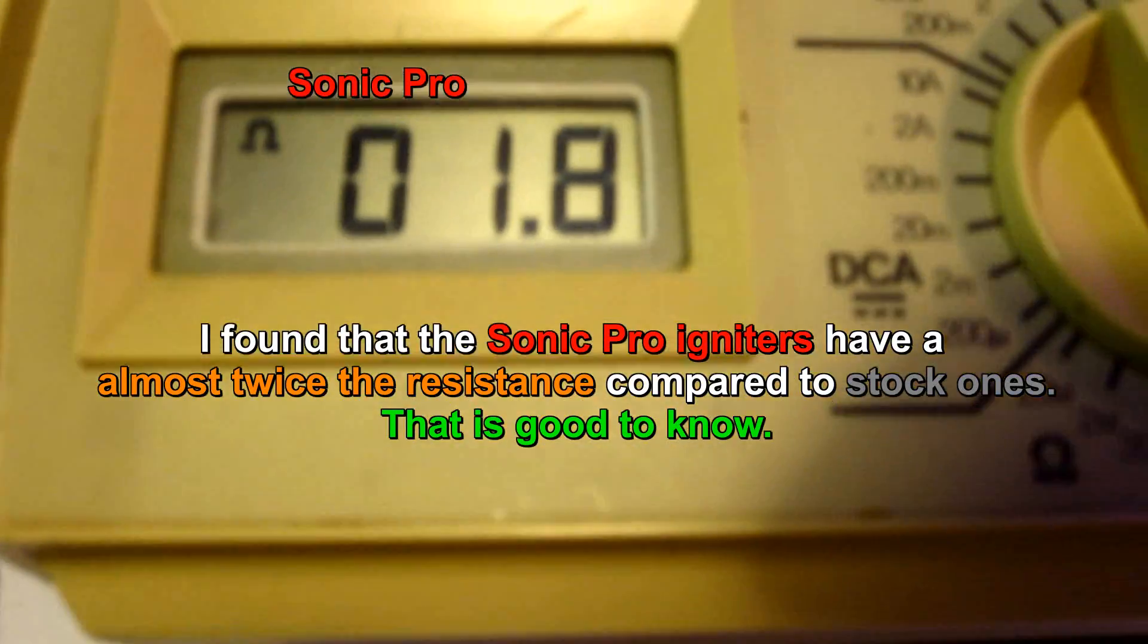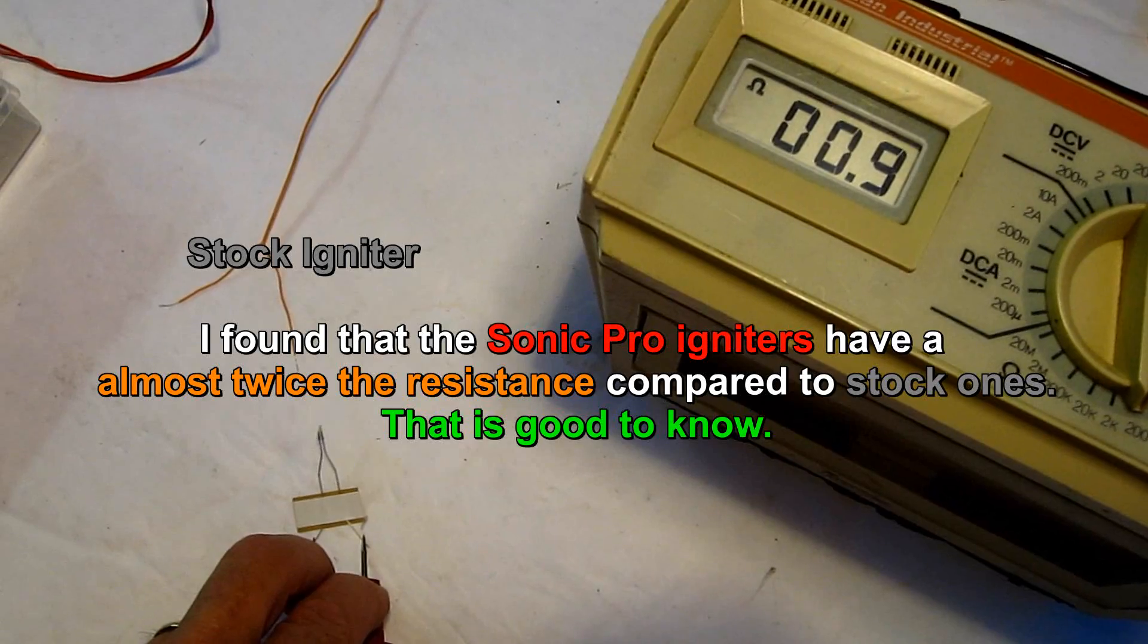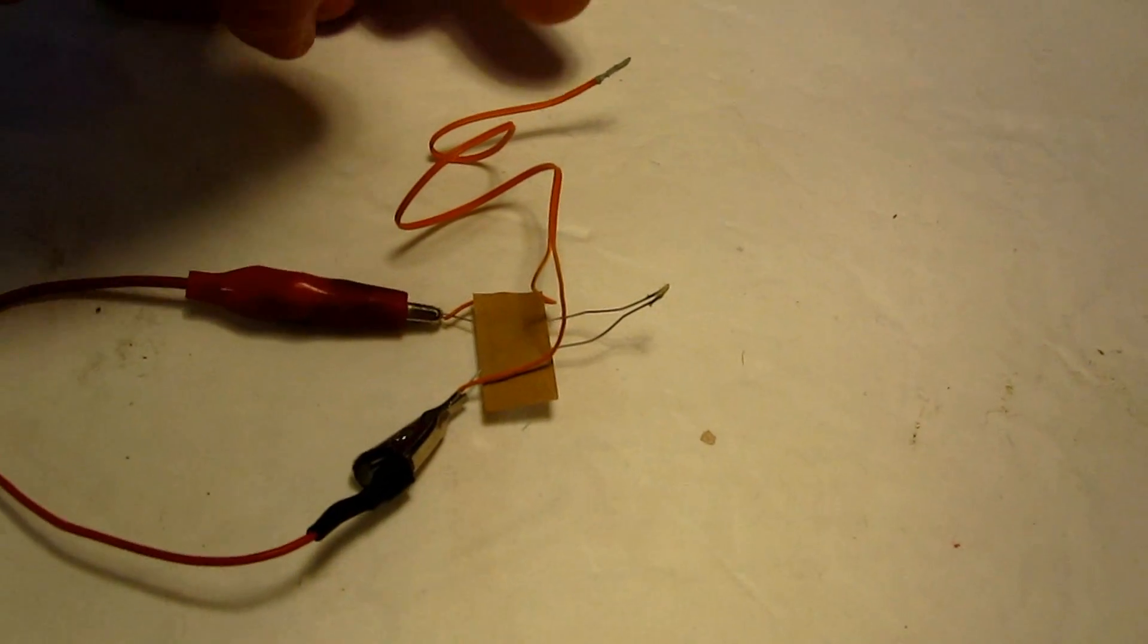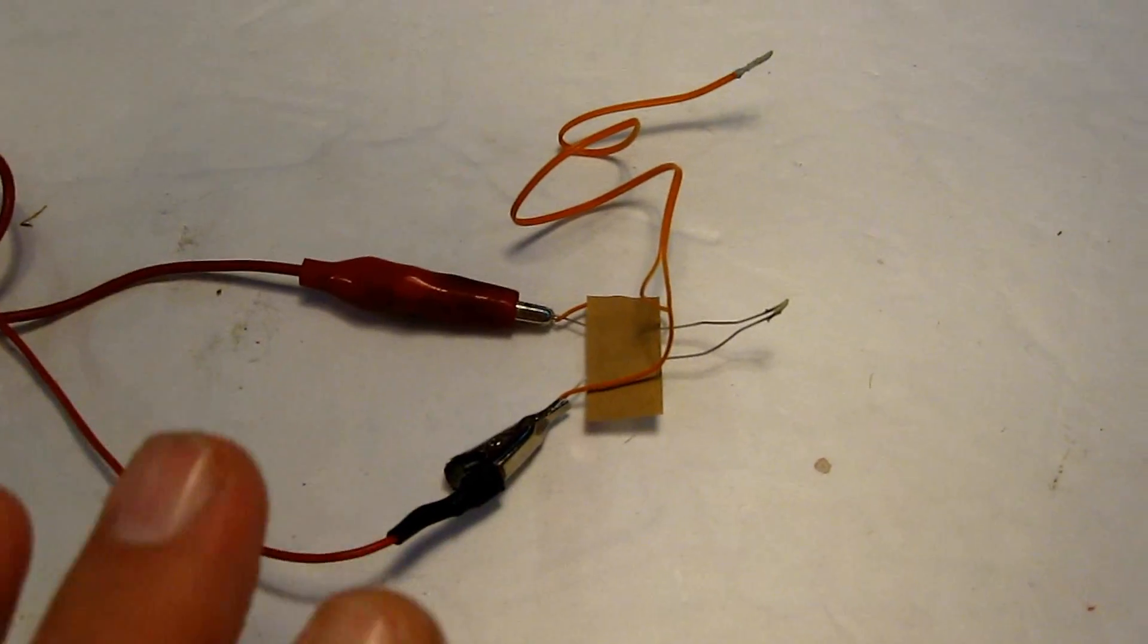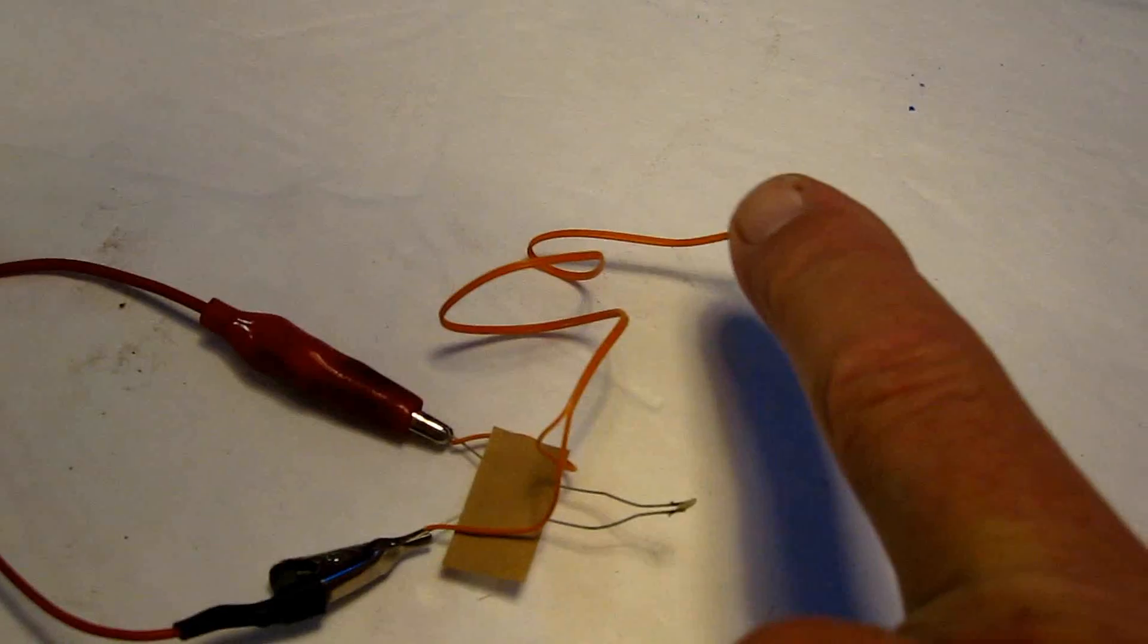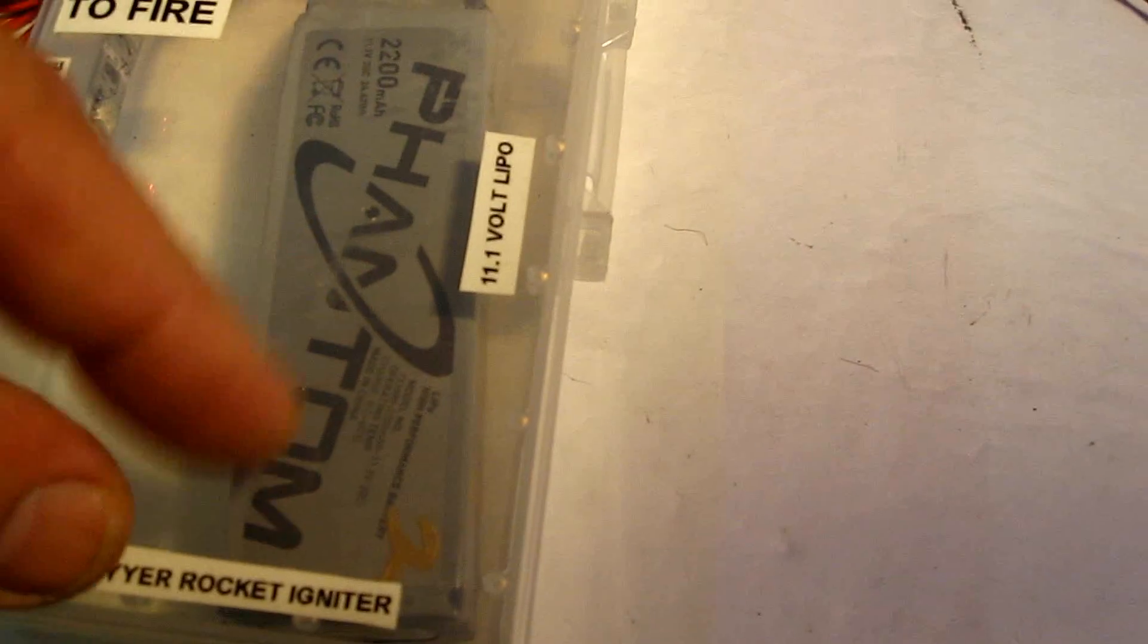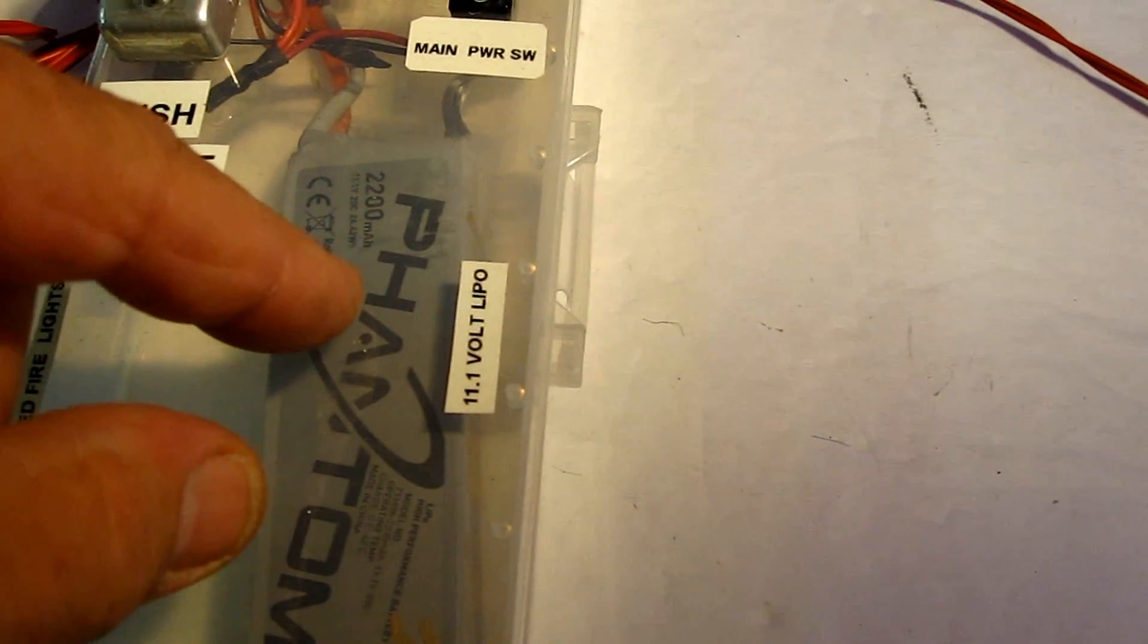Resistance on the sonic is 1.8. The resistance on the old version igniter is 0.6. So what we've learned is the resistance is higher on the sonic Pro series versus the original ones. I'm going to test it to prove what I already think is going to happen, and that is this one is going to light first and that one will go second because it has more resistance. I'm running this on only a fully charged 2200 milliamp LiPo which is actually showing at about 14 volts, higher than this battery because this isn't even charged.